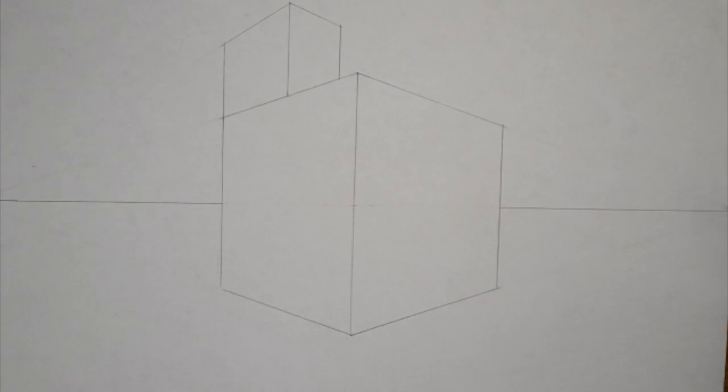And voila, I have an additional shape drawn in correct two-point perspective. So here's a few more different ways you could do this.